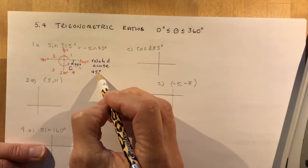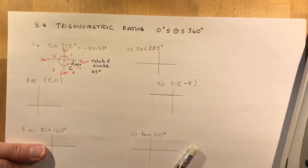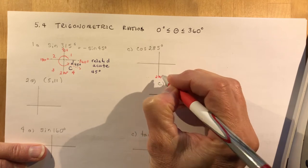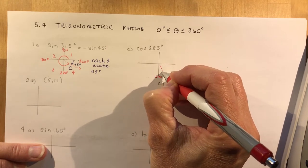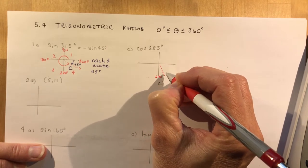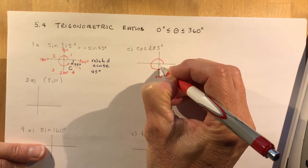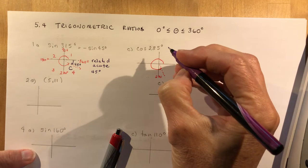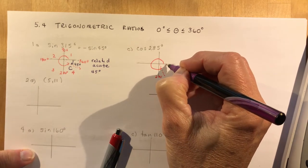So: related acute is 45°, the sine would be negative. Next, 285 degrees. This is 270 here, so 15 more degrees this way. I'm going from here around to here. Remember the related acute angle is between the x-axis and the terminal arm.